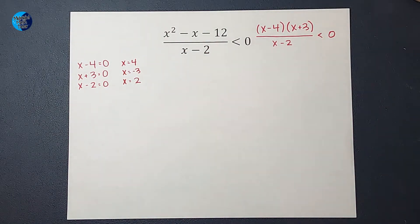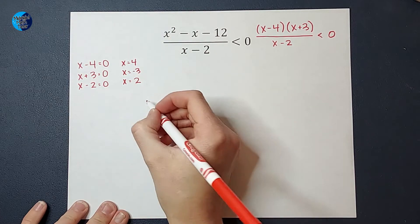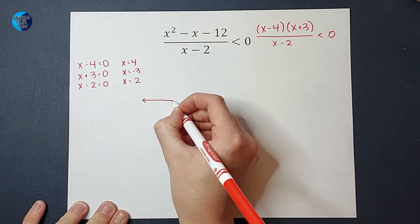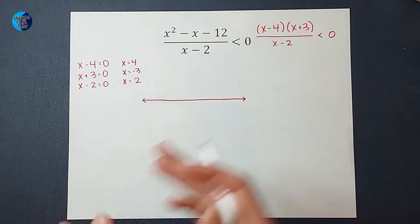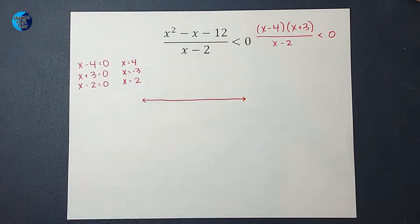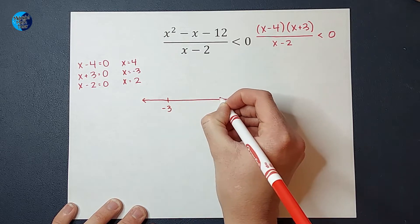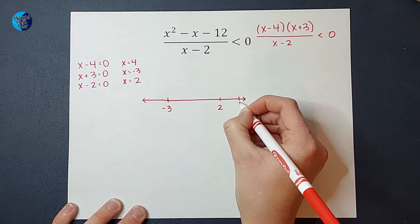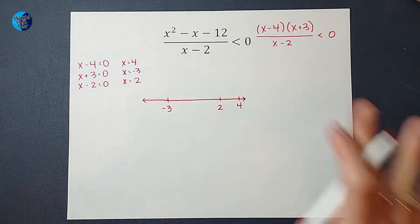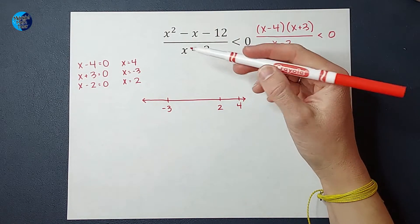Now I am going to draw a number line. I bet you just shouted for joy because number lines are your favorite thing. I'm going to represent each of these on my number line. So I'm going to have -3, 2, and 4. Your spacing doesn't have to be perfect.